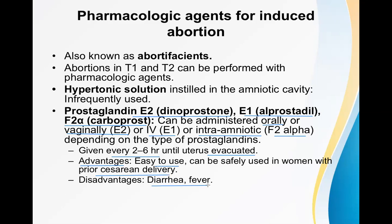Minor adverse effects of prostaglandins include diarrhea and fever, which can be managed. Regarding their mechanism of action: they have two important functions — they dilate the cervix and increase uterine contractions. These effects make them effective for termination of pregnancy.